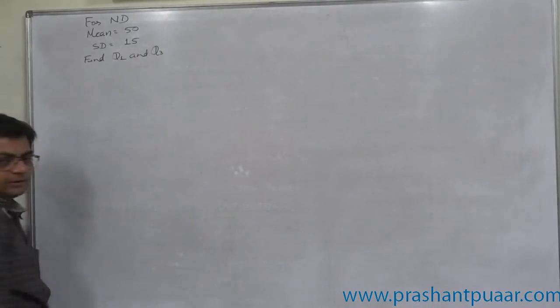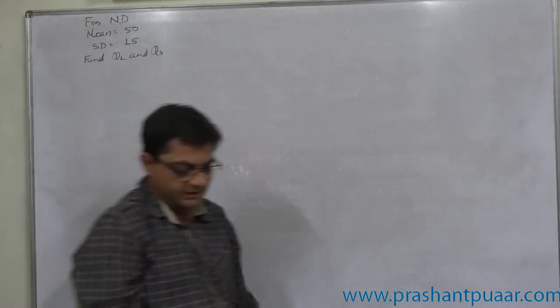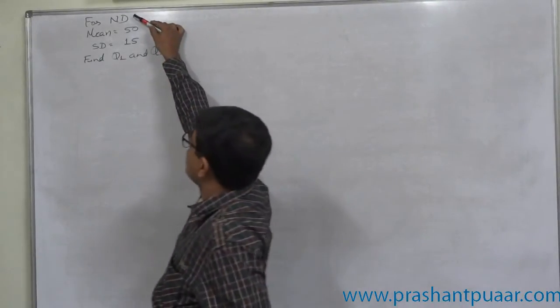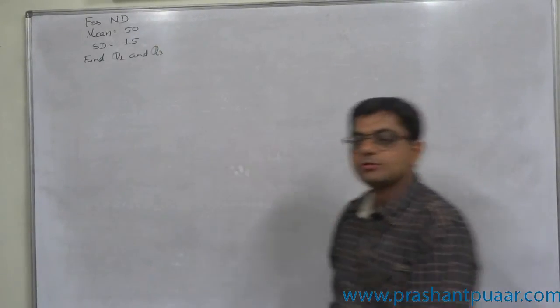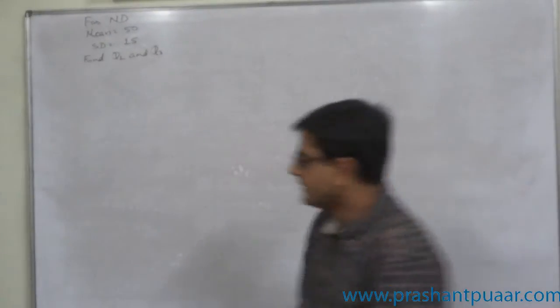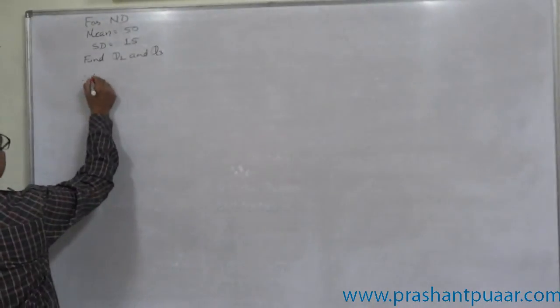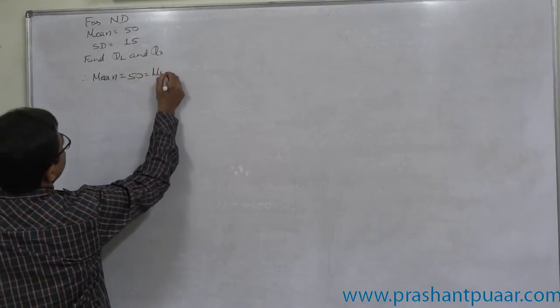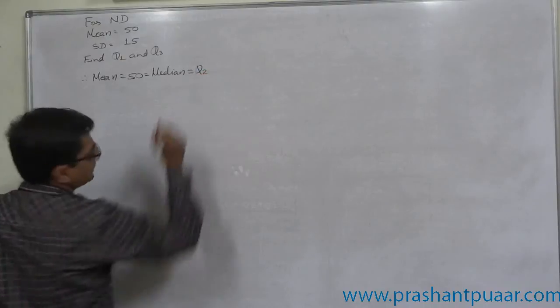Now, first of all, some of the properties. One is, in normal distribution, mean equals to mode equals to median. That means, if mean is 50, that means median or Q2 is also 50.